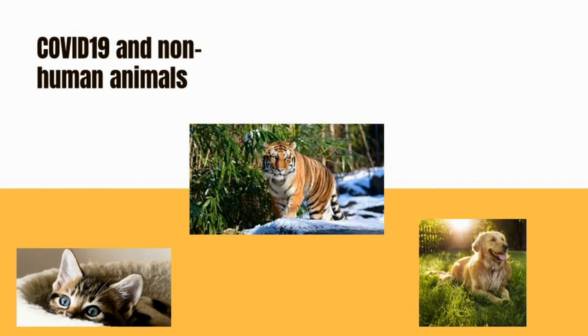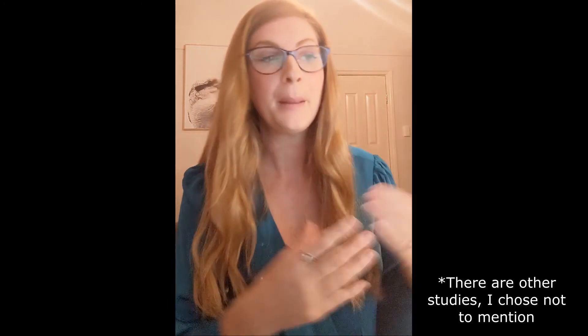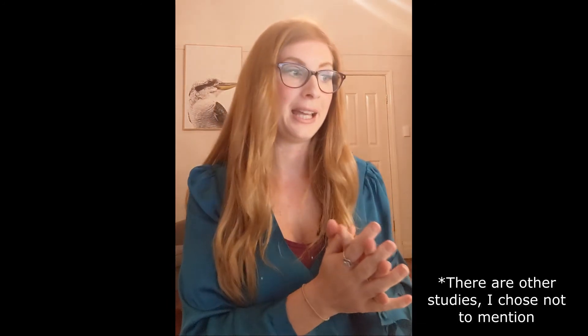We can also give the virus to our domesticated kittens and to our domesticated dogs. It's highly likely that other animals can get COVID-19 as well, but we're not going to go around infecting them to find out. We've just found this kind of stuff out through people actually giving it to their pets. The good news is that they do seem somewhat more resilient than what we are, so they don't seem to suffer as much.